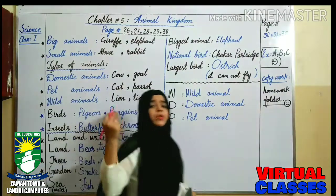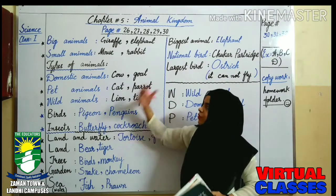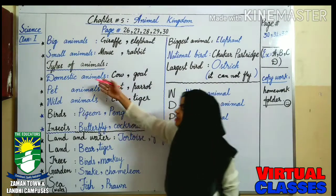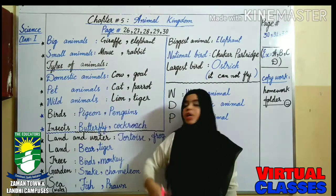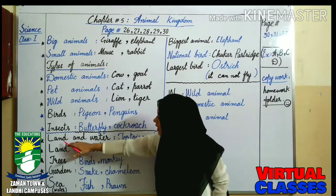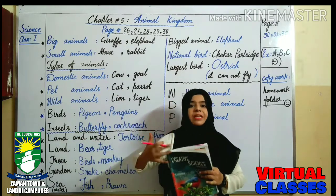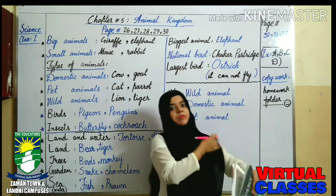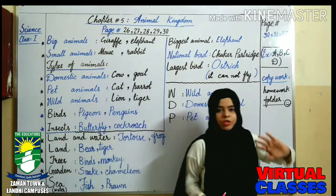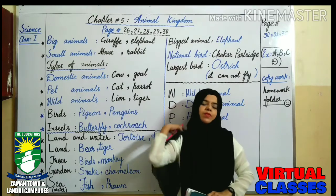I just want to ask some questions. What is the chapter name? Animal Kingdom. What did we learn? We learned about different types of animals — big animals, small animals — and different categories: domestic animals, pet animals, wild animals. We also learned about birds and insects, as well as where animals live: land, trees, gardens, seas, and water. I have also told you about the biggest animal, the largest bird, and the national bird. I hope you all understood this chapter. If you have any confusion, you can ask. Take very good care of yourself.